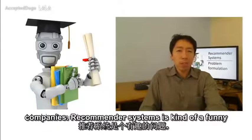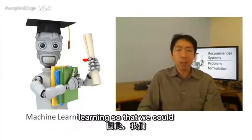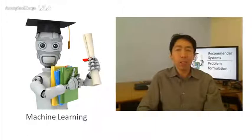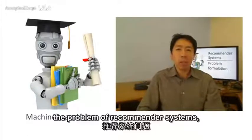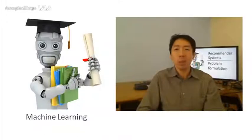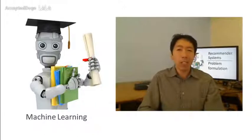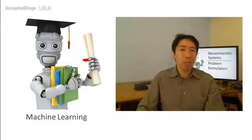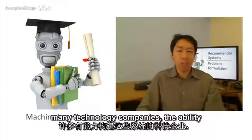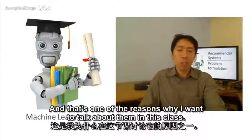Recommender systems is kind of a funny problem. Within academic machine learning, if you go to an academic machine learning conference, the problem of recommender systems actually receives relatively little attention — it's a smallish fraction of what goes on within academia. But if you look at what's happening in many technology companies, the ability to build these systems seems to be a high priority. And that's one of the reasons why I want to talk about it in this class.